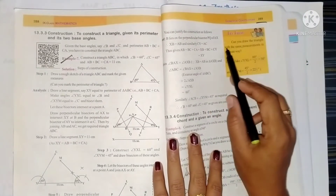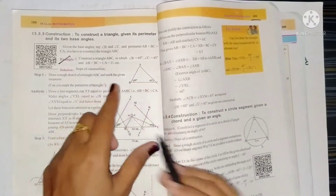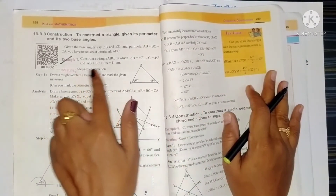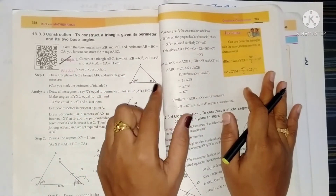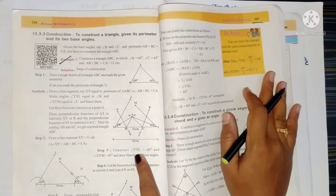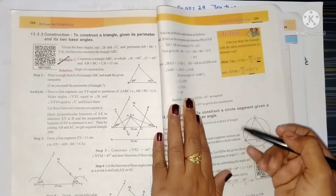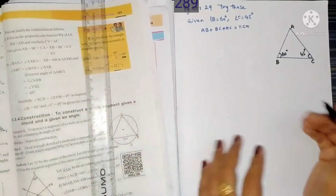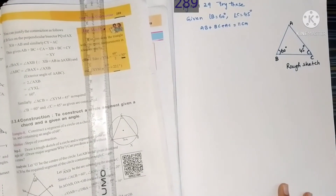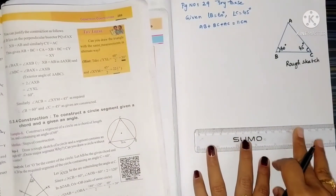Page number 289, Try This: Can you draw the triangle with the same measurements in an alternative way? Here we can take Example 7 as an alternative approach. The sum of three sides and angles B and C are given. For angles 60 and 45, we draw angular bisectors — in the alternative way, we take half of the given angles: 30 and 22 and a half degrees. For any construction, always draw the rough sketch first, just like drawing a plan before constructing a house. The sum of three sides is 11 centimeters.